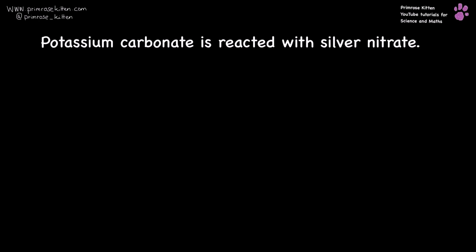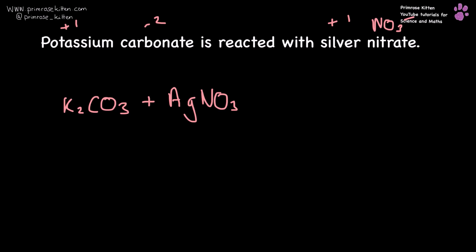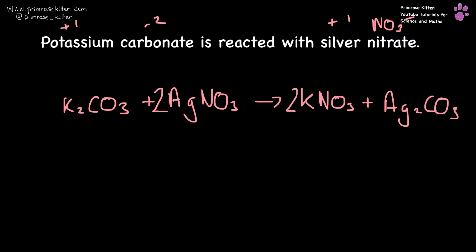Potassium carbonate — potassium is plus one, carbonate is minus two — reacted with silver nitrate. Silver is plus one and nitrate is NO3 minus. So we have K2CO3 plus AgNO3. Swapping over of ions, we're going to get KNO3 plus Ag2CO3. Now we just need to balance it — all we need to do is put a two in front of the silver nitrate and a two in front of the potassium nitrate.